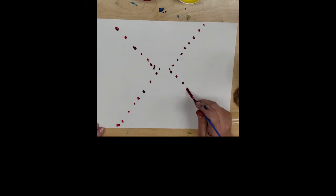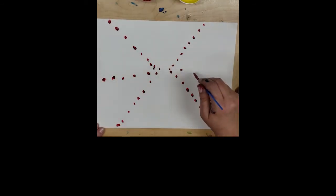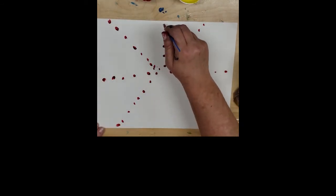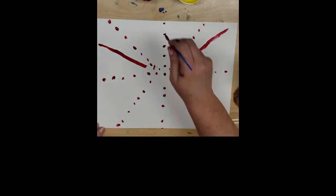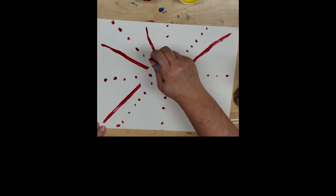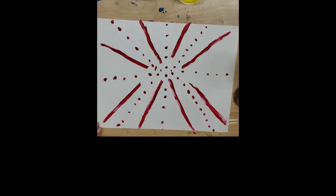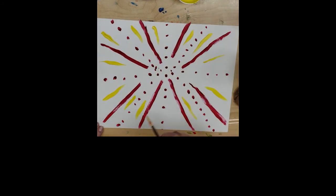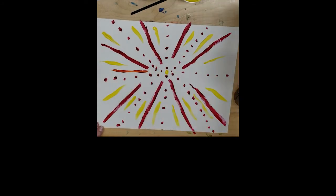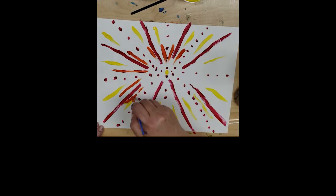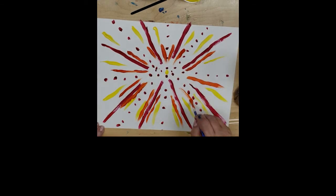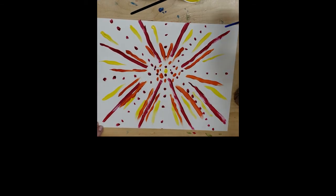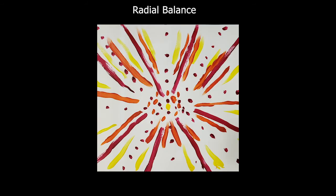And now a quick radial balance demonstration — that's where everything radiates from a central point. This time I'm putting my central point right in the middle of my paper so that it'll be symmetrical as well as radial. I'm having lots of fun with lines, dots, and colors, using warm colors to create a radial balanced Mandala-type design. So there you have all three examples again.